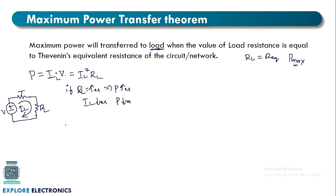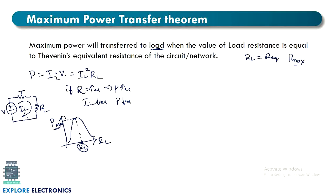From this, if we plot a graph of power versus RL, as we increase RL, power is also increasing. At some point when IL starts to decrease, power also decreases — meaning we get maximum power P_max at a particular point. At that point, if we draw a tangent, the slope will be zero.